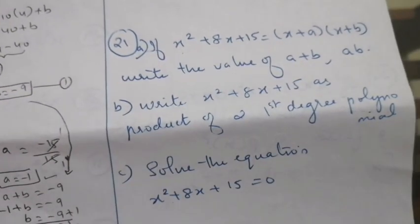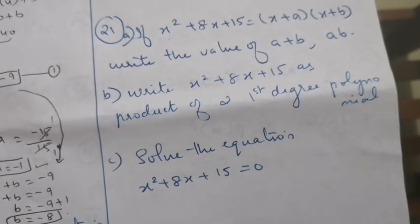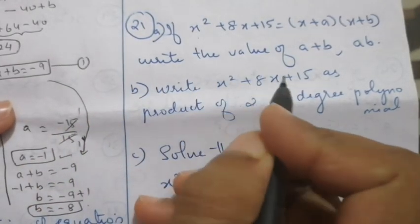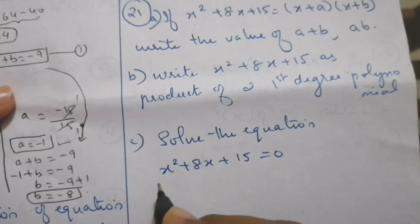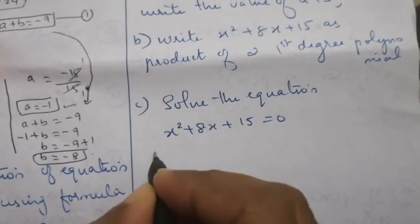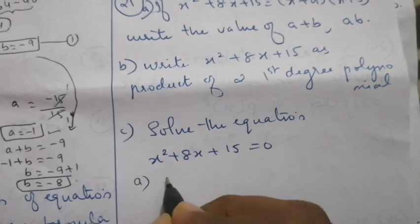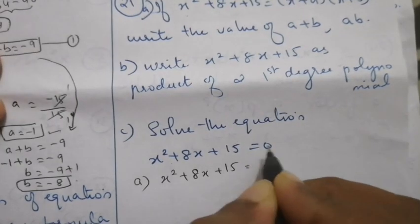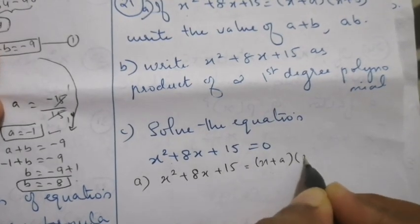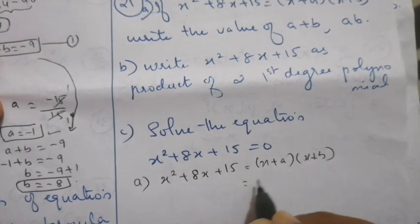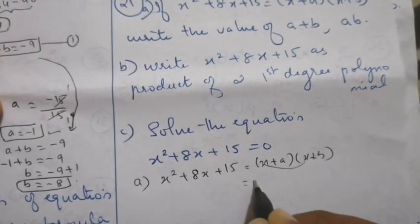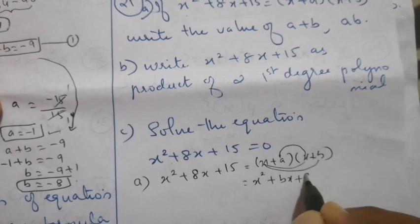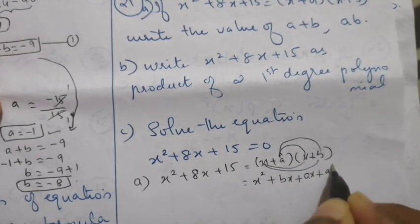Moving on to the next question. If x squared plus 8x plus 15 equals x plus a into x plus b, then write the value of a plus b and a into b. As shown in the previous video, we have the polynomial x squared plus 8x plus 15 equal to x plus a into x plus b. When we open this bracket: x into x is x squared, x into b is bx, a into x is ax, and a into b is ab.